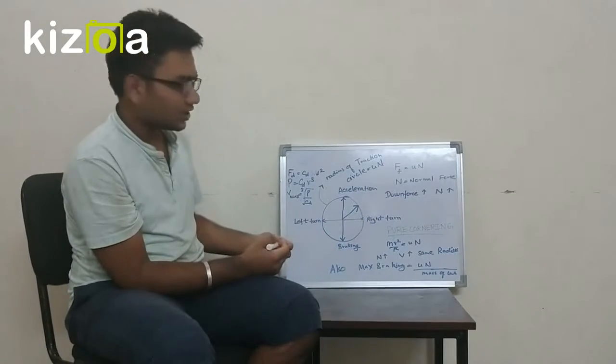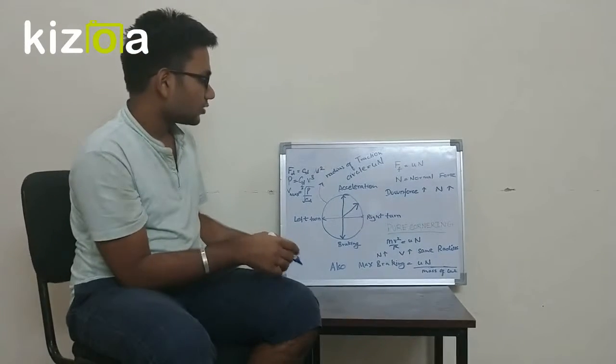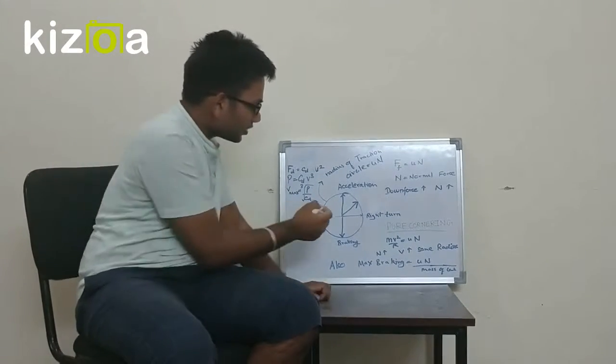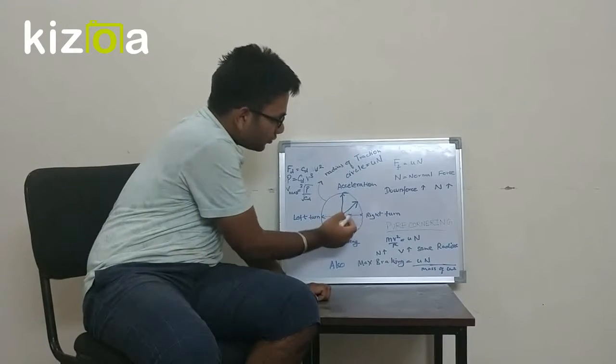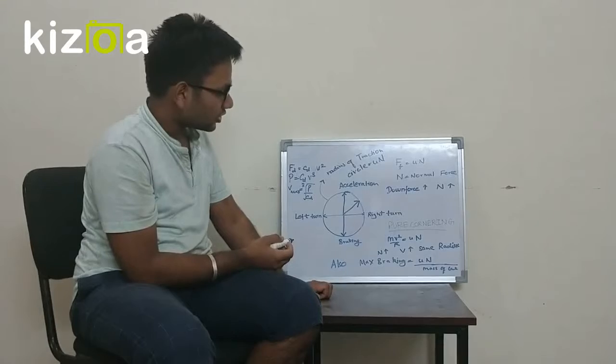But many times it arises that we need to both accelerate and corner. In that case, the resultant of both forces is equal to the radius of the friction circle.